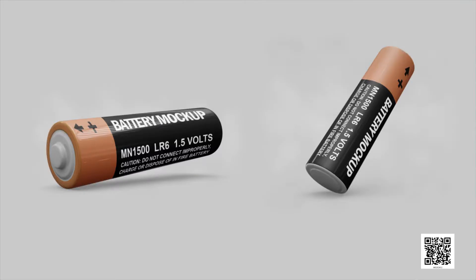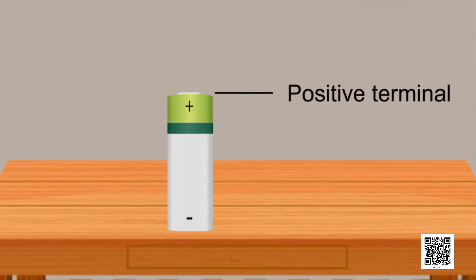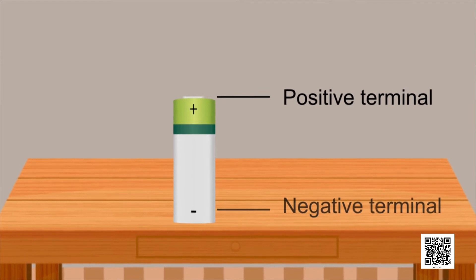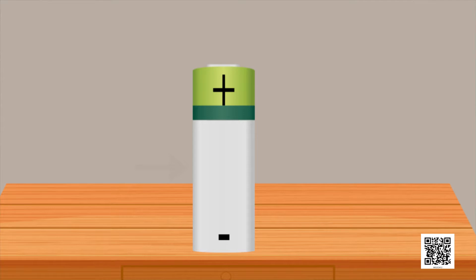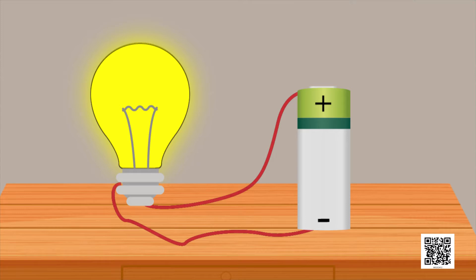Have you ever carefully looked at an electric cell? You might have noticed that it has a small metal cap on one side and a metal disc on the other side. The metal cap is the positive terminal of the electric cell, and the metal disc is the negative terminal. All electric cells have two terminals — a positive terminal and a negative terminal. An electric cell produces electricity from the chemicals stored inside it. When the chemicals in the electric cell are used up, the electric cell stops producing electricity.